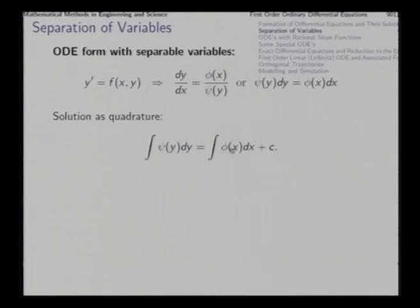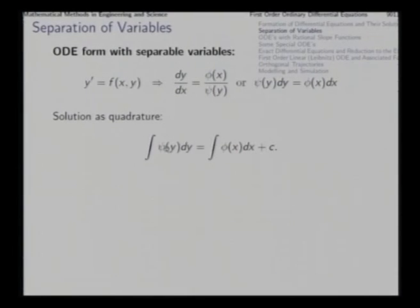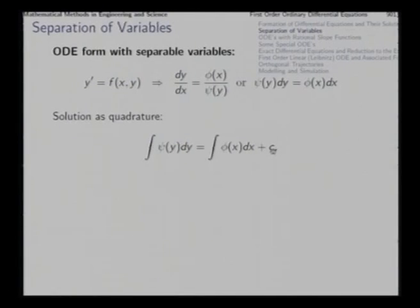Integration of the left side equals integration of the right side plus some constant — this is the arbitrary constant involved in the solution of the differential equation. Once you have this expression after integration, which is in x, y, and the arbitrary constant c, free of derivatives, you can say that you have solved this differential equation. This is the simplest possible situation: variables are separable.